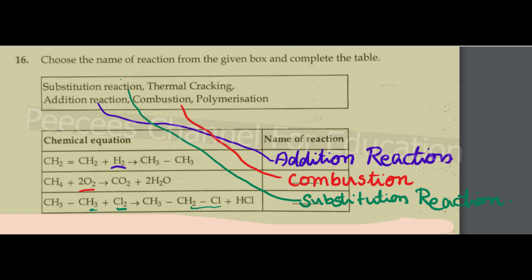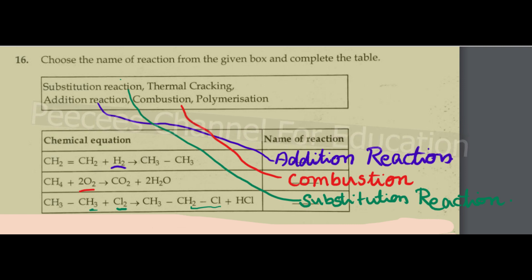16th question: Choose the name of reaction from the given box and complete the table. The reaction types given are: substitution reaction, thermal cracking, addition, combustion, and polymerization.